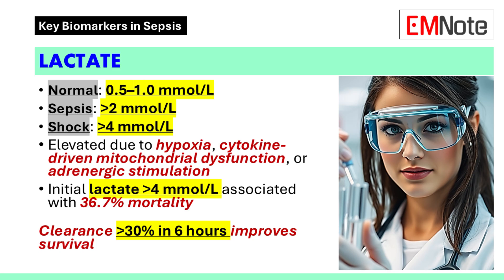Lactate production occurs through two mechanisms. Type A hyperlactatemia results from reduced oxygen delivery, leading to anaerobic glycolysis. Type B hyperlactatemia is cytokine-driven, where tumor necrosis factor alpha and interleukin-1 beta inhibit mitochondrial oxidation. Adrenergic overdrive also contributes to lactate production by stimulating sodium-potassium ATPase activity.